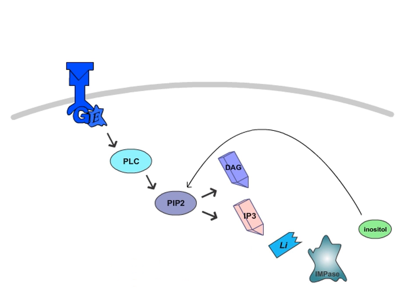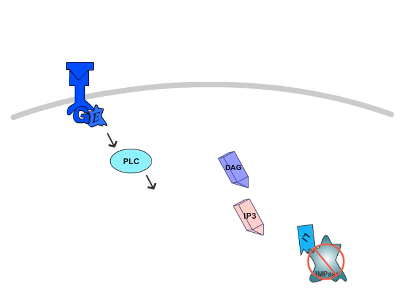Lithium stops IMPAs from turning inositol monophosphate into free inositol by binding to its magnesium site. This means that there is less available inositol for resynthesis into PIP2, and thus the formation of DAG and IP3 is reduced.